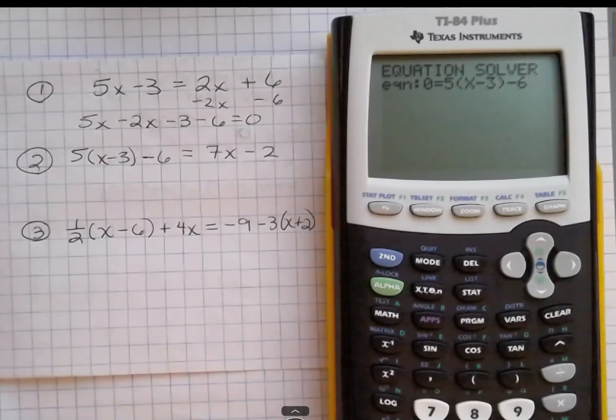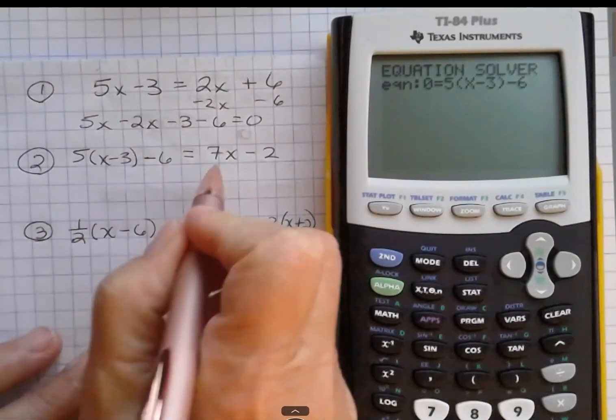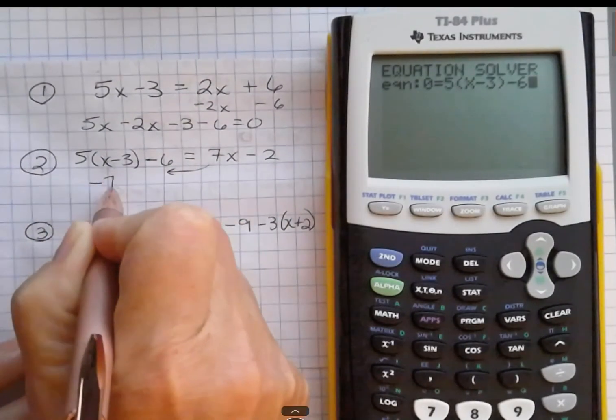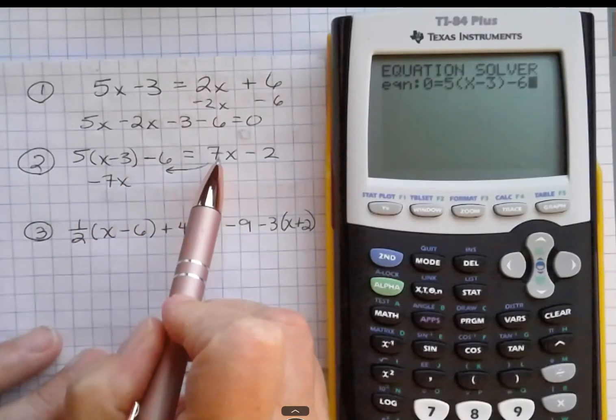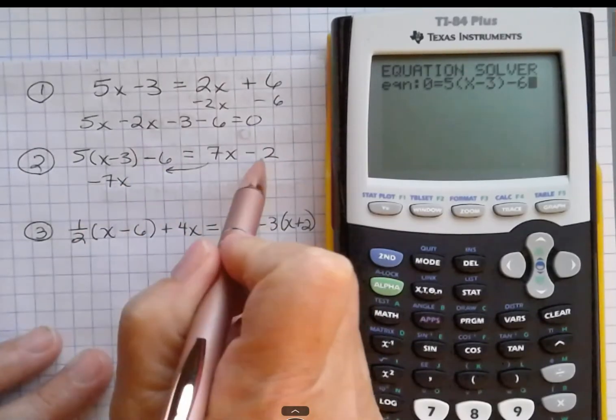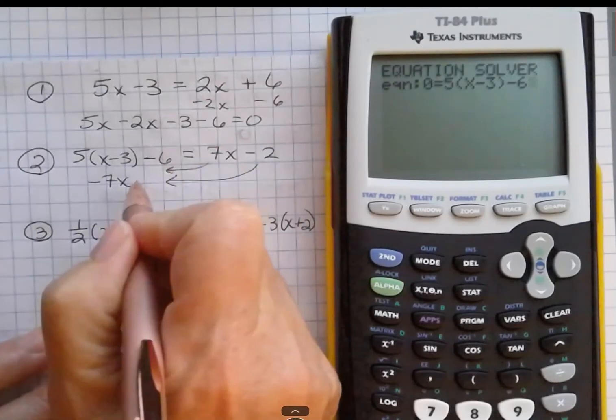So what I'm going to do is think about bringing that 7x over. And when it comes over, it changes sign. So the 7x becomes minus 7x and the minus 2 comes over and becomes plus 2.